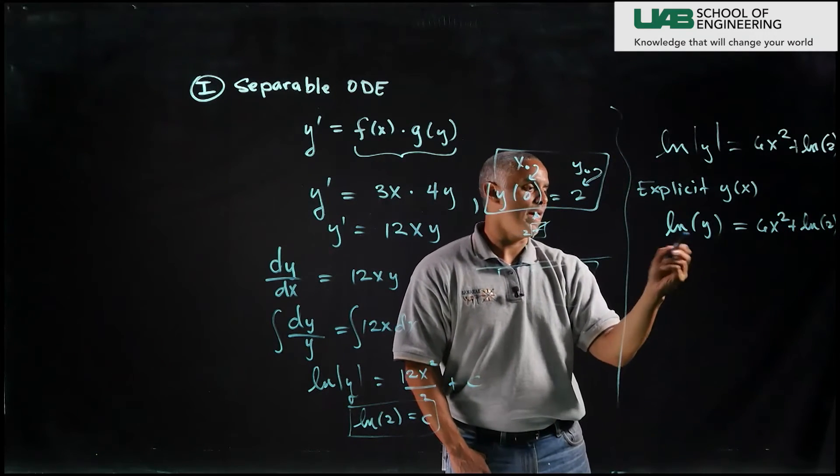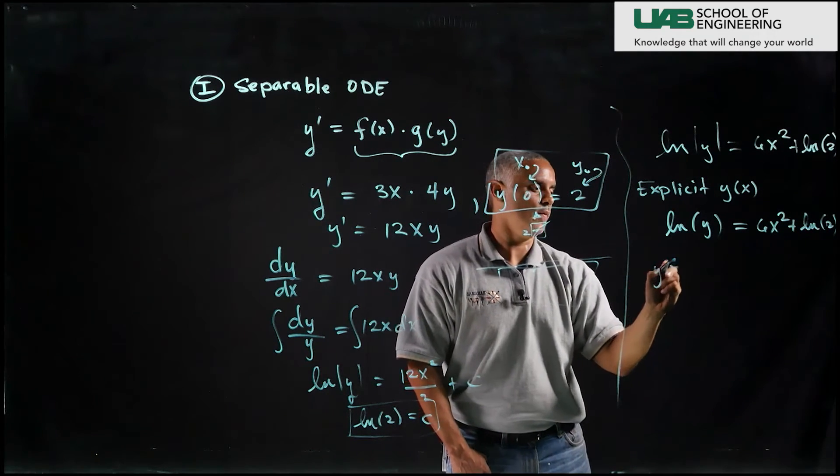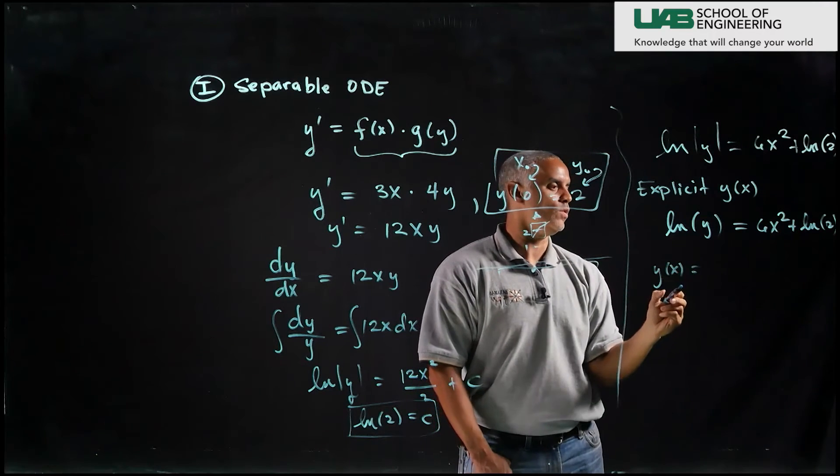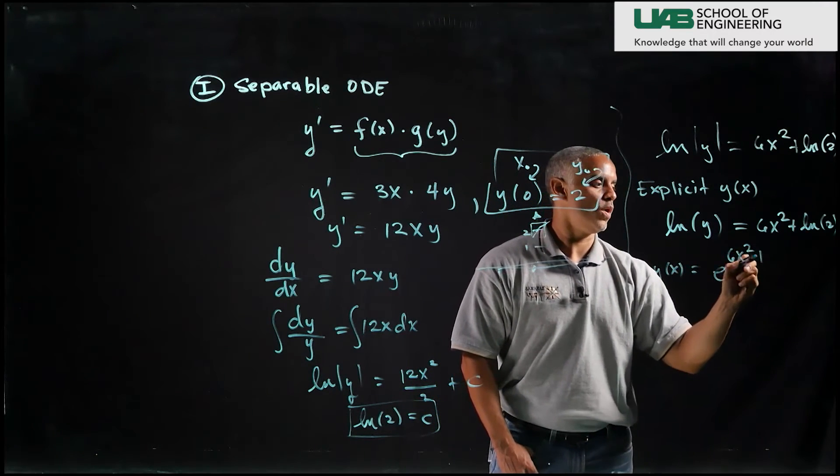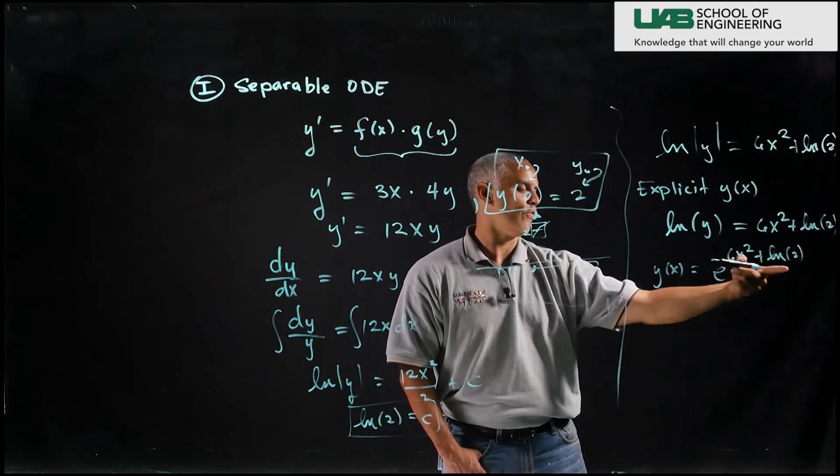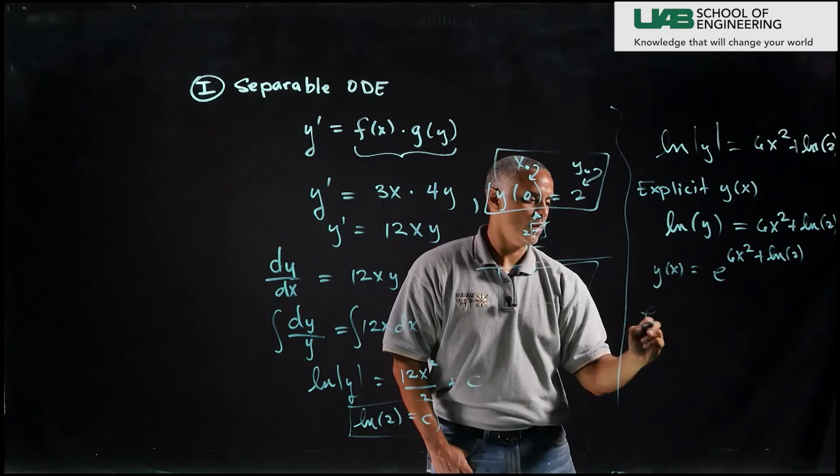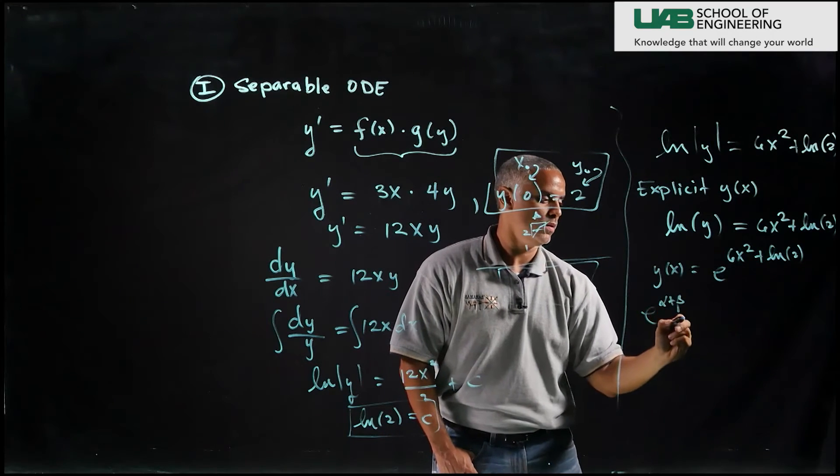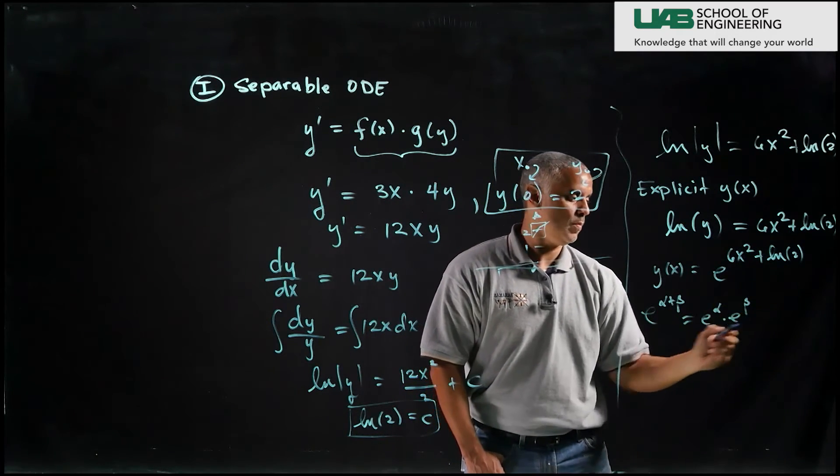And if I solve for y I exponentiate and I get my model y of x is equal to e to the 6x squared plus ln 2. And if we recall from algebra e to the alpha plus beta is the same as e to the alpha times e to the beta.